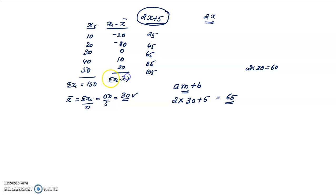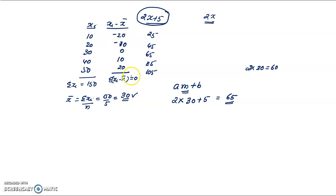This holds in all cases. The deviation of each observation is xi − x̄, and the sum of all these deviations from the arithmetic mean is always zero. This is an important property.